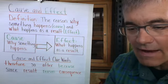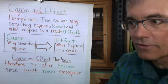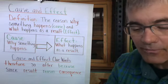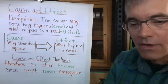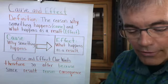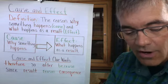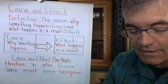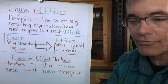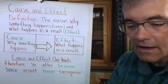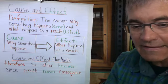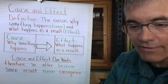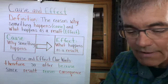Be thinking right now of instances in your life where there has been a cause and effect relationship. Some important clue words for cause and effect are: therefore, so, after, because, since, result, reason, and consequence. These are signal words that tell us that there's going to be a cause and effect relationship happening.